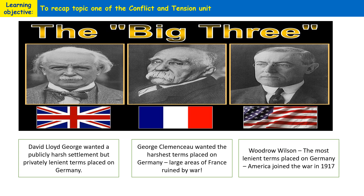Now we've got Georges Clemenceau. Like the British public, the French public were very angry about what happened to French men during the First World War, and also the damage inflicted on large parts of Eastern France. Therefore, Clemenceau wanted to punish Germany harshly. He was concerned Germany might invade France again in the future, so he wanted to impose really harsh terms. He didn't want Germany to have an army at all, he wanted Alsace-Lorraine returned to France, and he wanted to impose crippling reparations to be paid to France.